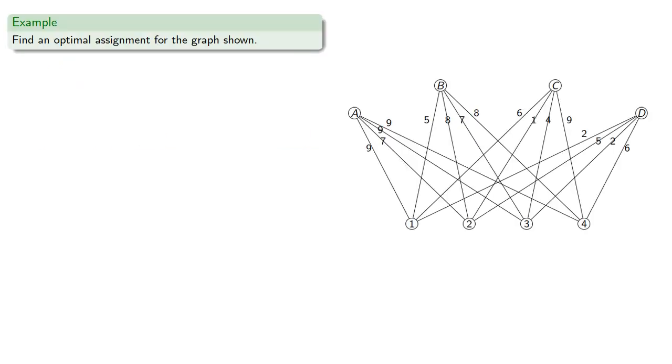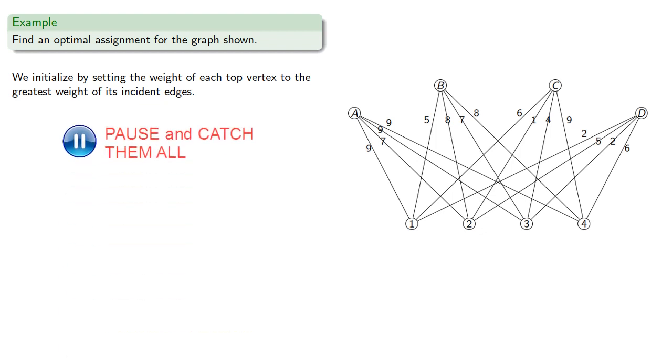So we might try to find an optimal assignment for the graph shown. We initialize by setting the weight of each top vertex to the greatest weight of its incident edges, and the lower weights are set to zero. Then find the equality graph.